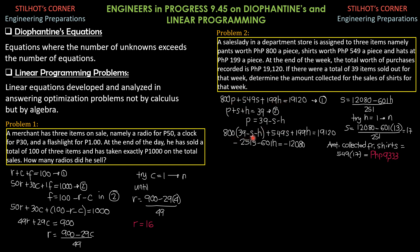800 times quantity 39 minus S minus H plus 549 S plus 199 H equals 19,120. Simplifying, negative 251 S minus 601 H equals negative 12,080. Or, let's multiply everything by negative 1 and simplify S therefore is 12,080 minus 601 H over 251. So, we then substitute H equals 1 to N.